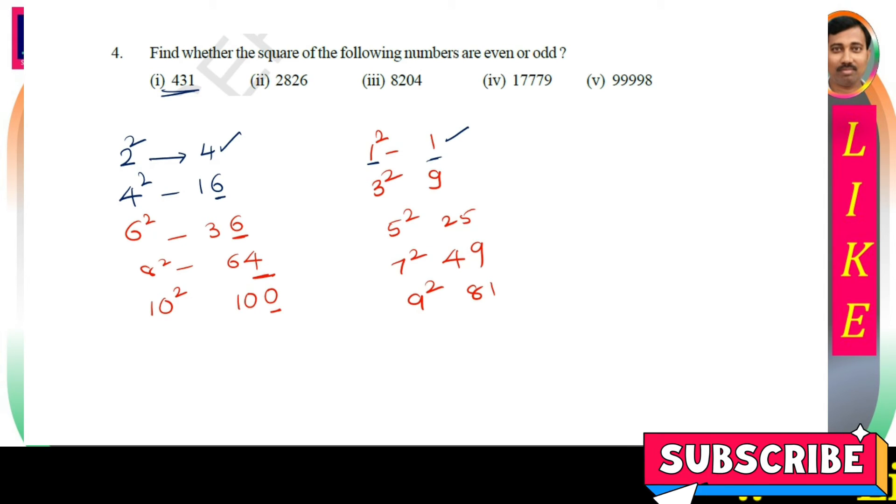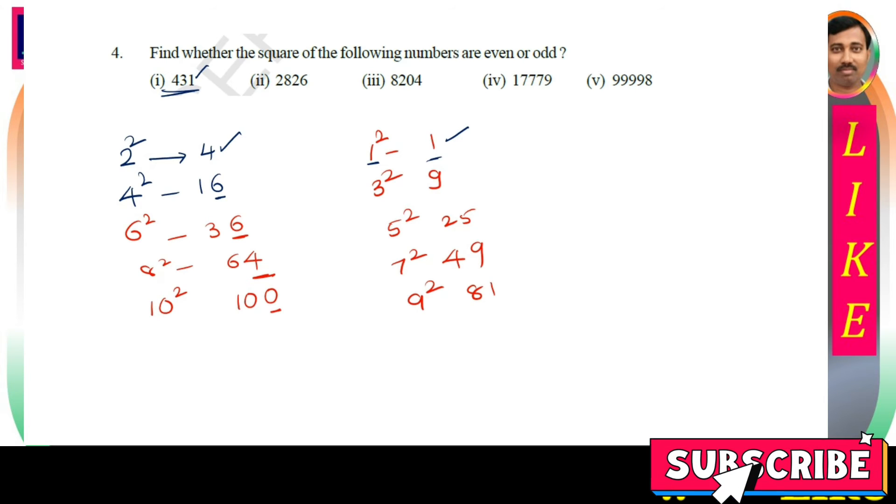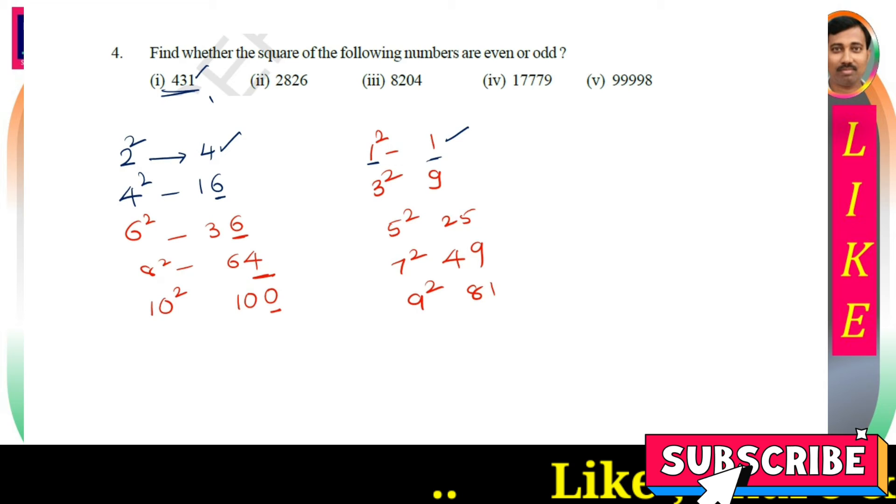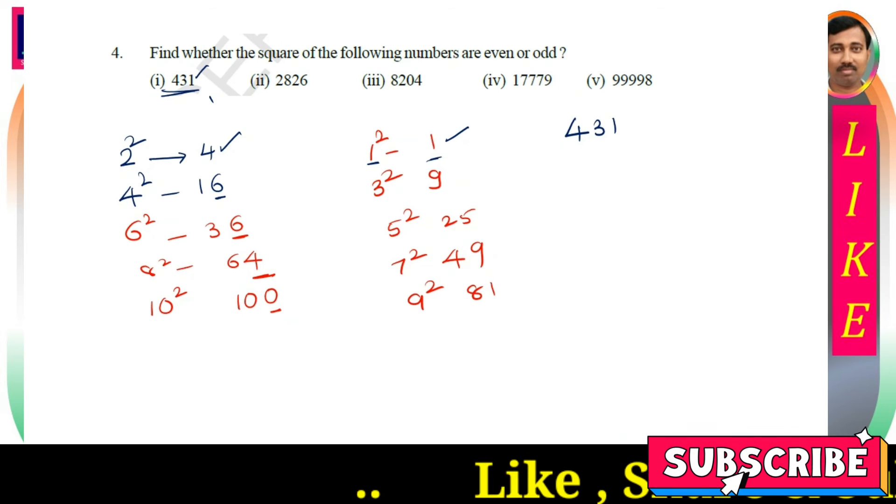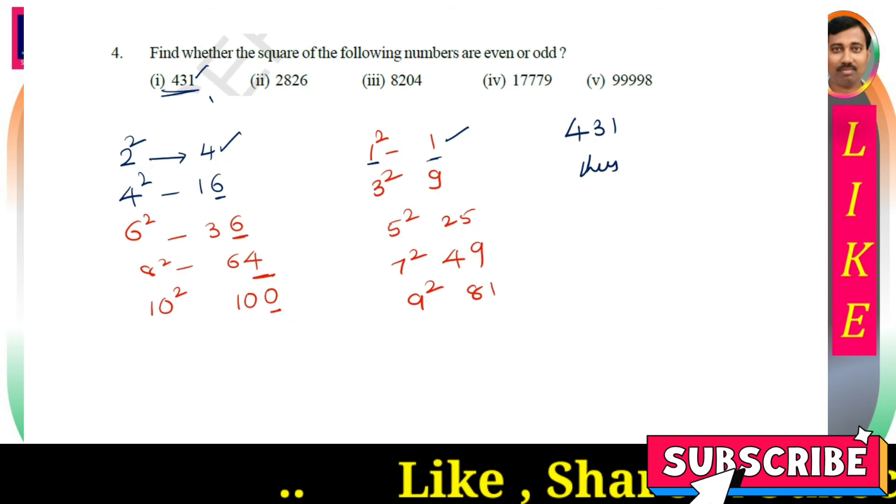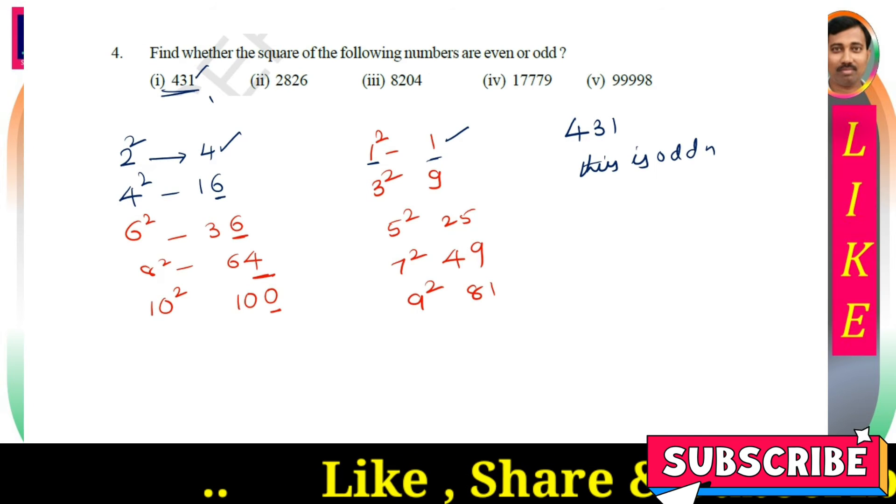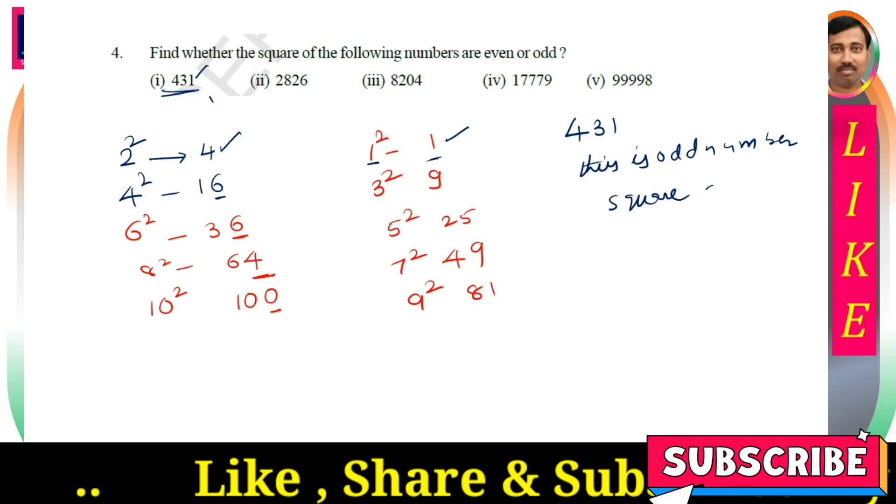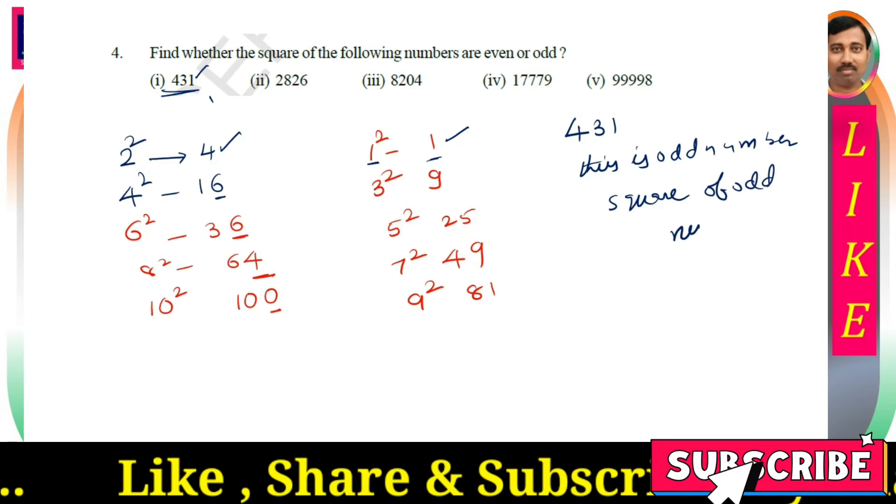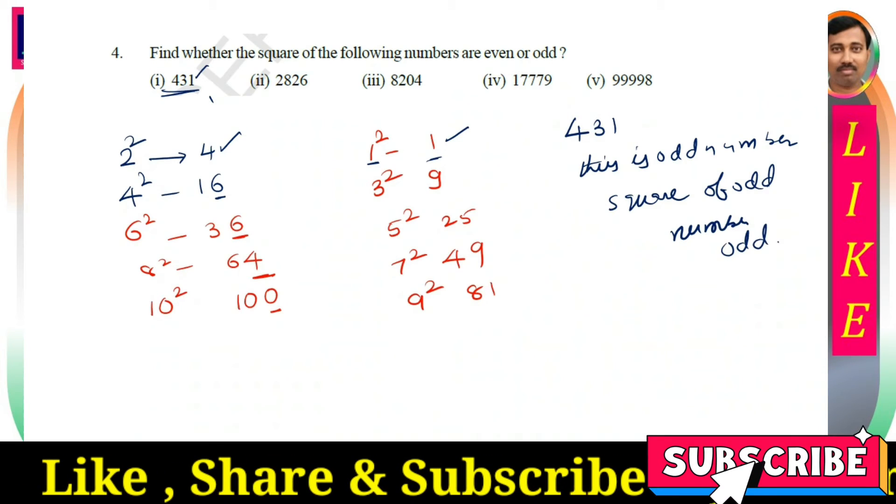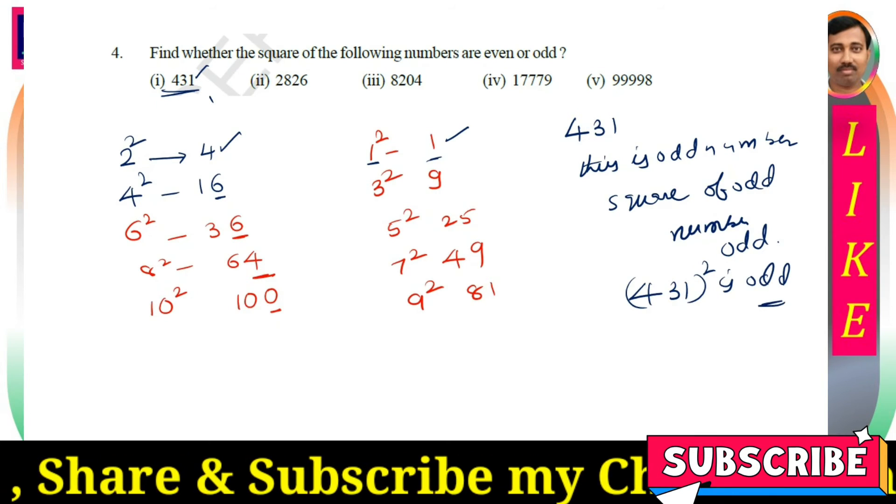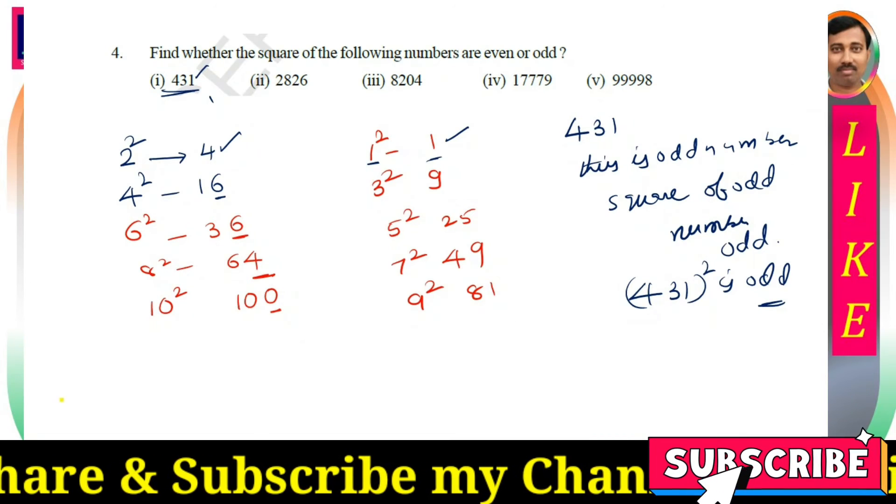So for 431, observe: 1 is in the unit place, which is an odd number. The square of an odd number is always an odd number. Therefore, 431 square is odd. This is how you should answer. For the remaining questions, just observe the unit place and answer accordingly.